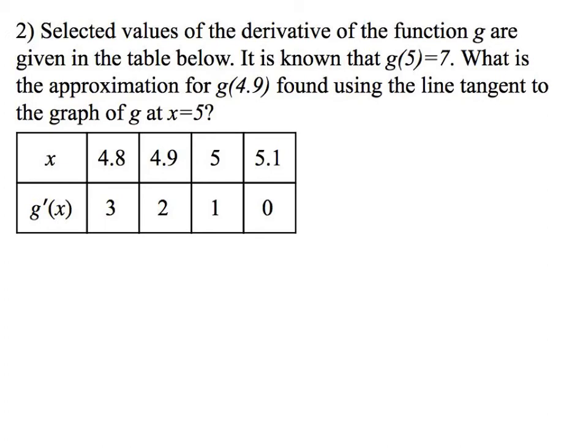So, we know that I have a coordinate (5,7). And we also know at 5, don't we also know the slope is 1? Because isn't, according to the table, g'(5) = 1? From this, could we make a tangent line to approximate g(4.9)? Yes, we can.